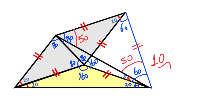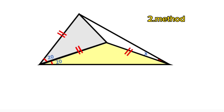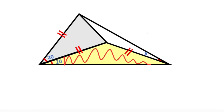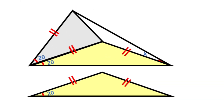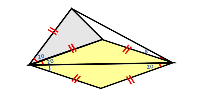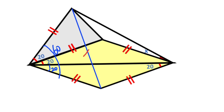That was the first method. Now we will calculate the value of x using the second method. I copy this triangle, reverse it, and paste it. We know that the triangle is an isosceles triangle, so here must be equal to 20 degrees. Notice that here is 60 degrees, which means if we connect these two corners we get an equilateral triangle, so these angles are 60 degrees.